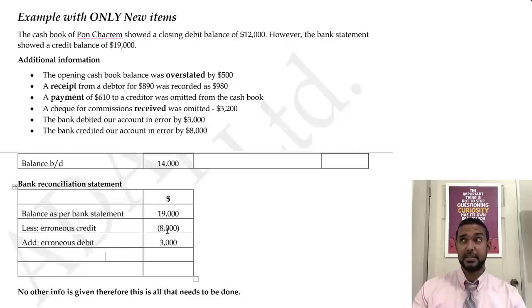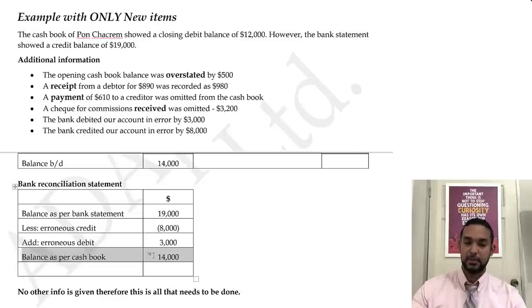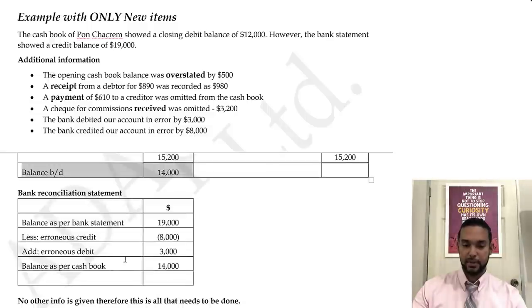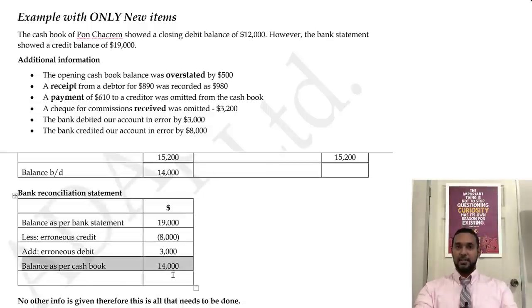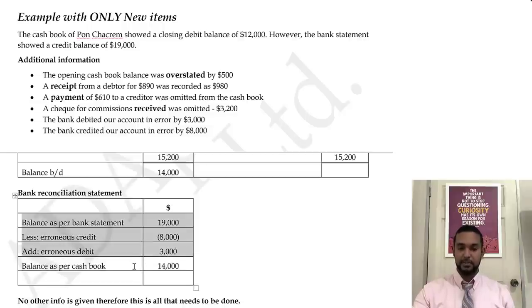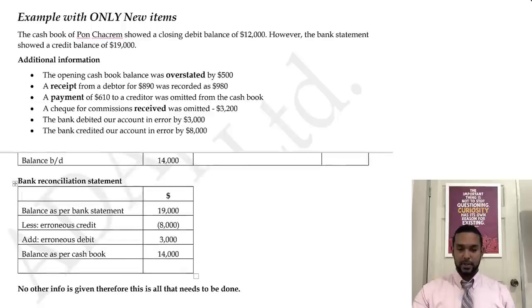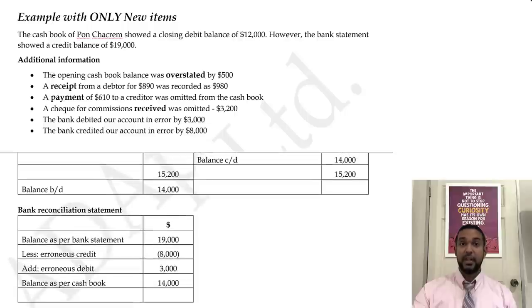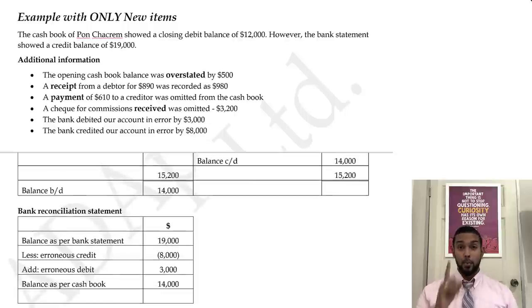So: 19 minus 8 is 11, plus 3 is 14,000. And that matches the updated cash book balance — the reconciliation works. Since no other information is given, this is all that needs to be done.